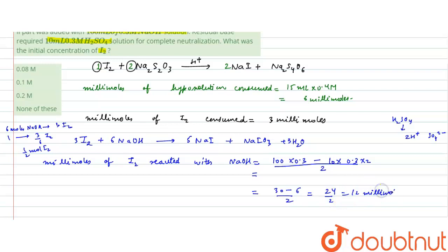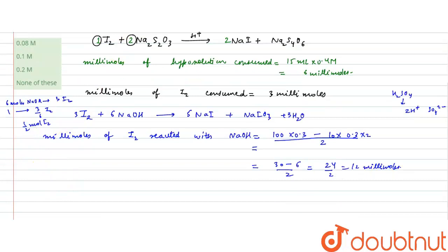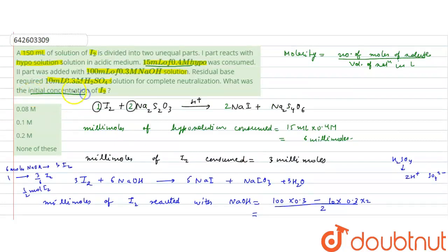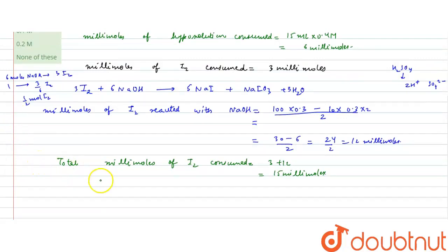Now we have the total millimoles of iodine. Millimoles of iodine that reacted with hypo solution = 3 millimoles, and millimoles of iodine that reacted with NaOH = 12 millimoles. So total millimoles of I₂ = 3 + 12 = 15 millimoles. The question asks for the initial concentration (molarity) of iodine; total volume of solution = 150 mL.